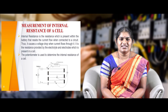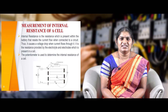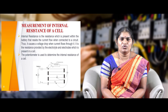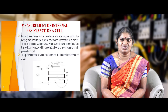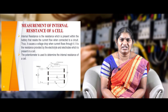Next, we discuss the measurement of internal resistance of a cell. Internal resistance is the resistance present within a battery that resists the flow of current when connected to a circuit. It causes a voltage drop when current flows and is the resistance provided by the electrolyte and electrodes within the cell.